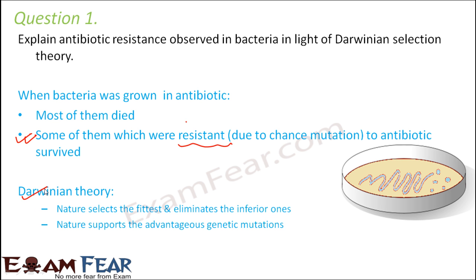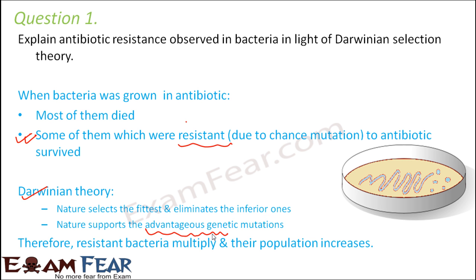Nature selects the fittest. Here, the fittest are those resistant to antibiotics, so they can grow better. It eliminates the inferior ones — those which died. So only the resistant ones remain and on further reproduction they will produce the resistant variety. Nature supports only advantageous genetic mutations, so resistant bacteria will multiply and their population will gradually increase.